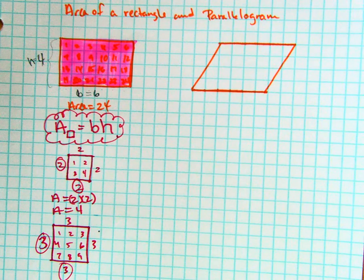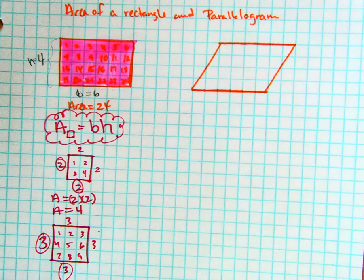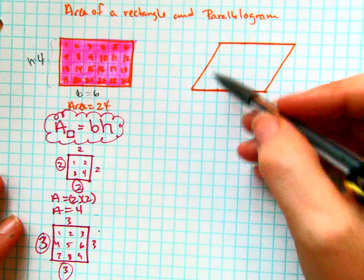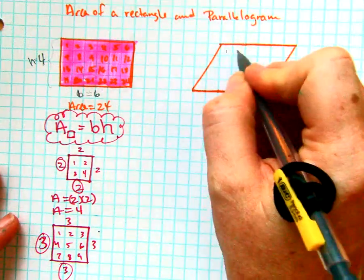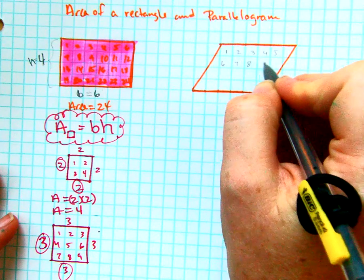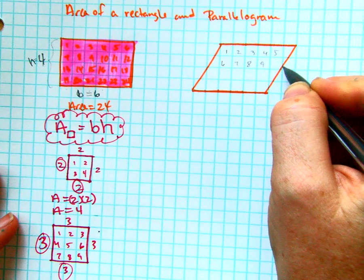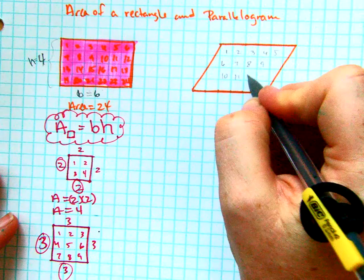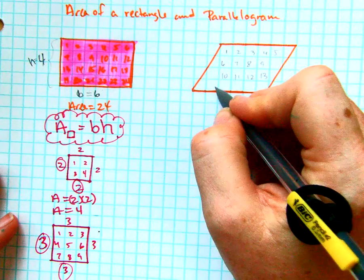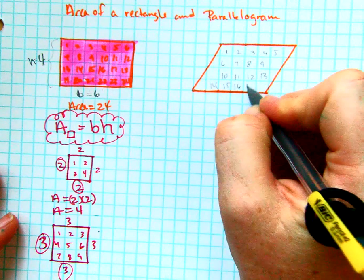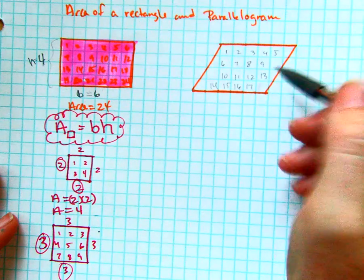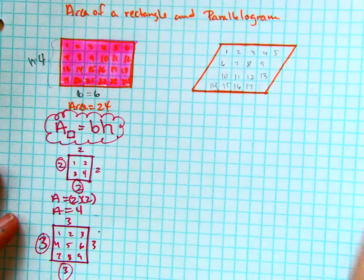So if we're talking area, the thing that makes this a little harder is that if I want to count the inside space so that I can find the area of it, this would be one, two, three, four, five, six, seven, eight, nine. But then this isn't really a whole one. Ten, eleven, twelve, thirteen. This might not be a whole one. Fourteen, fifteen, sixteen, seventeen. This might not be a whole one. And so we have this issue of these partial blocks on the sides.